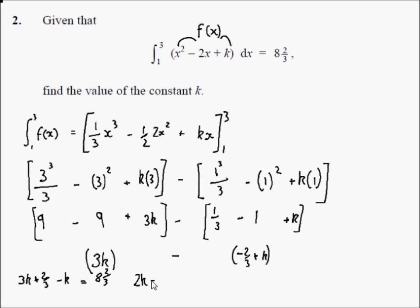2k plus 2 thirds. So then subtract 2 thirds from both sides.